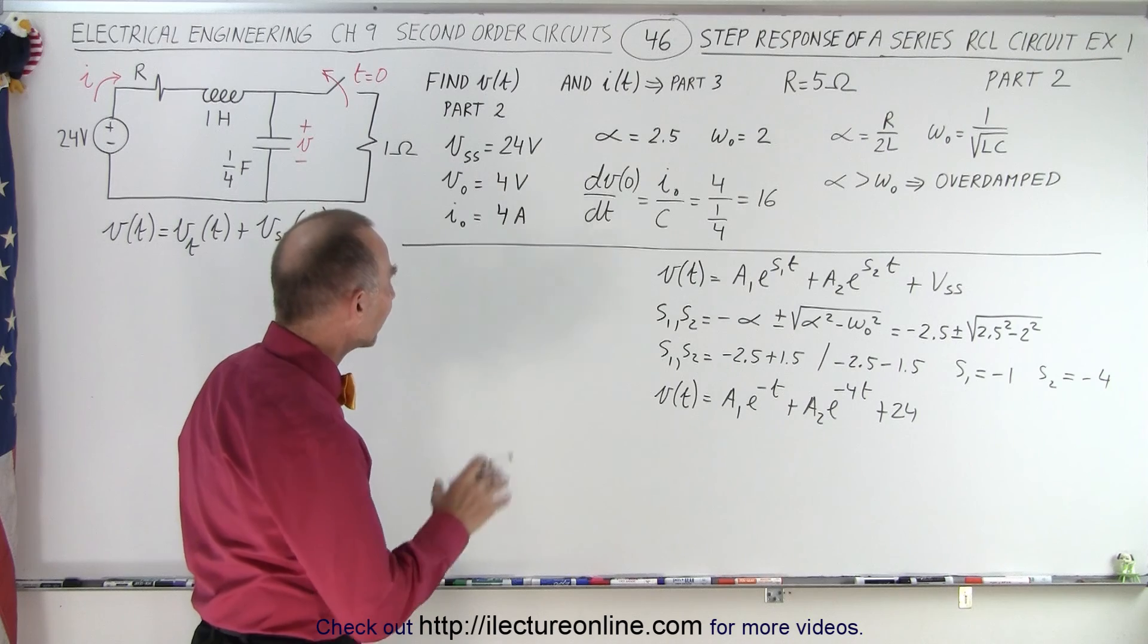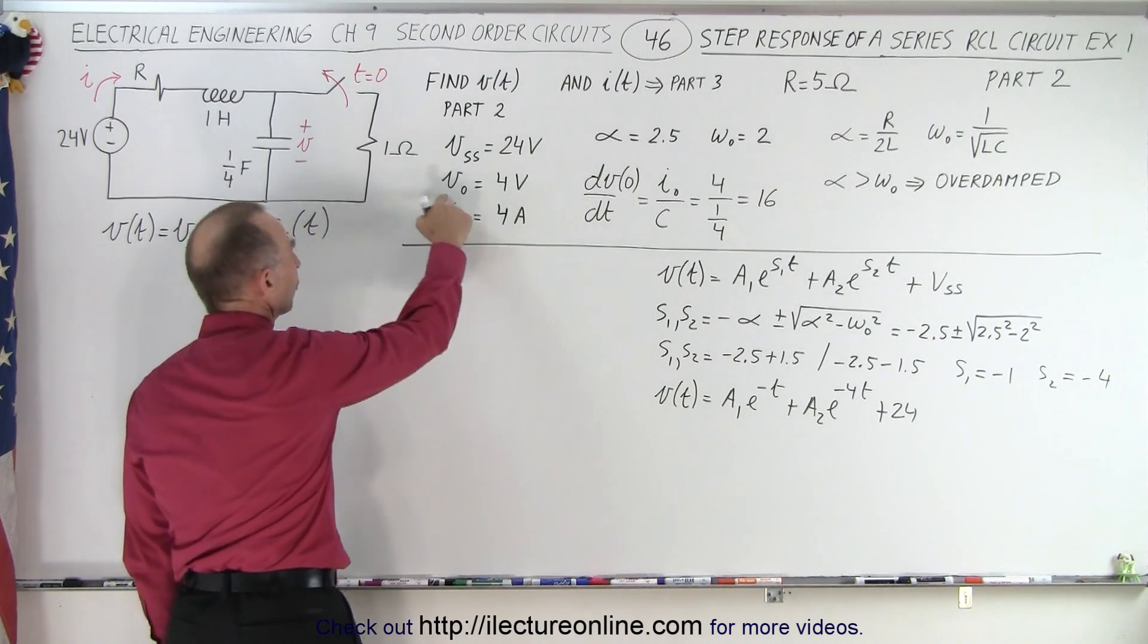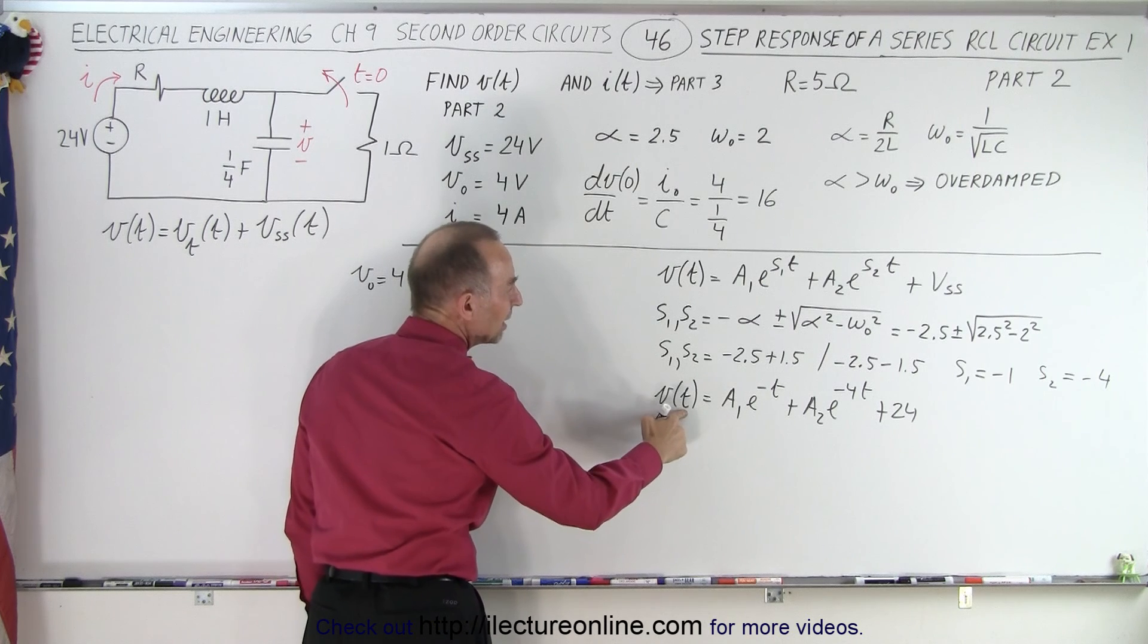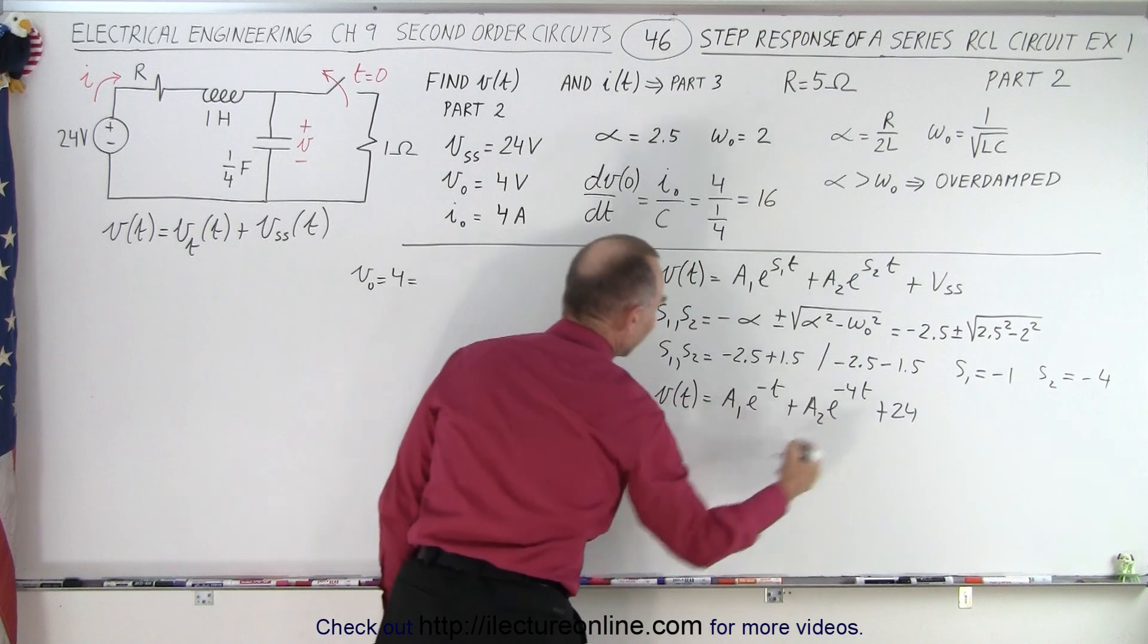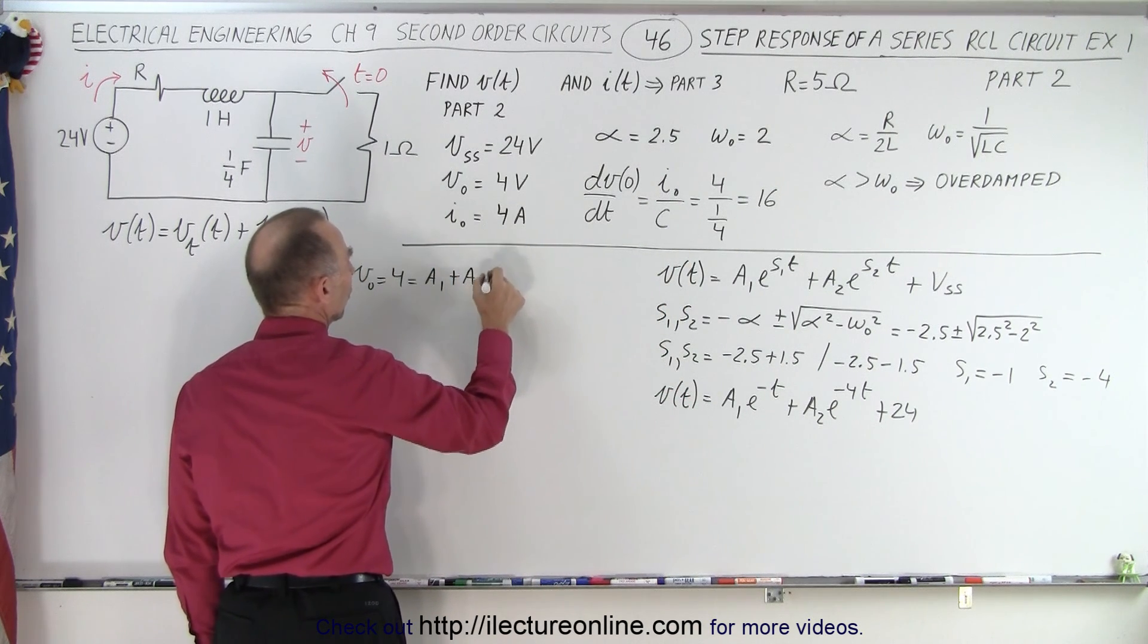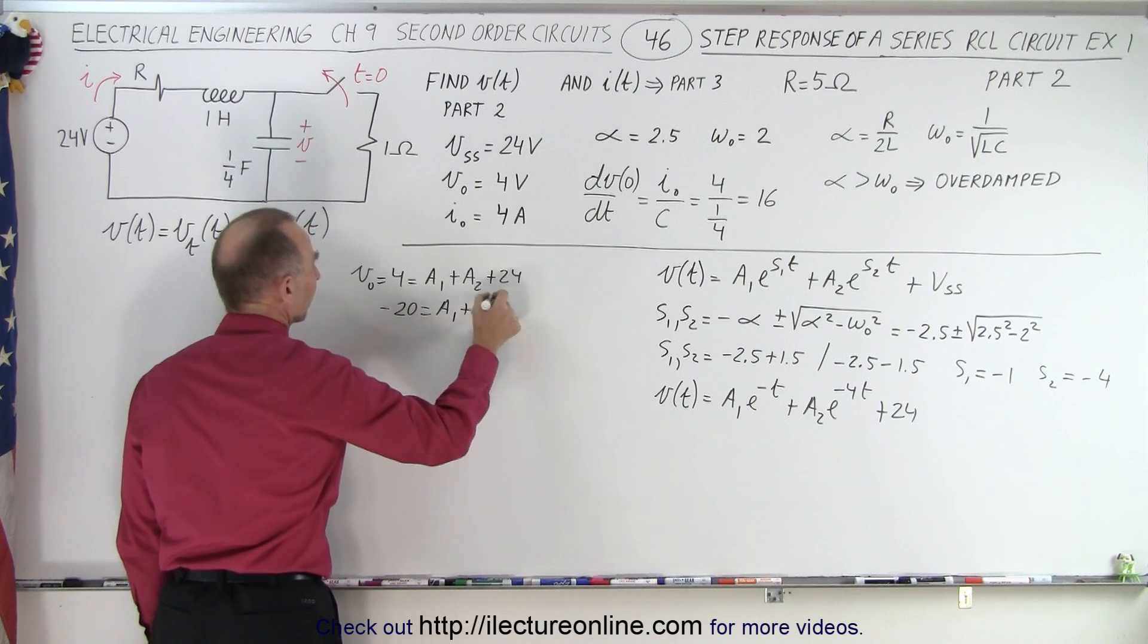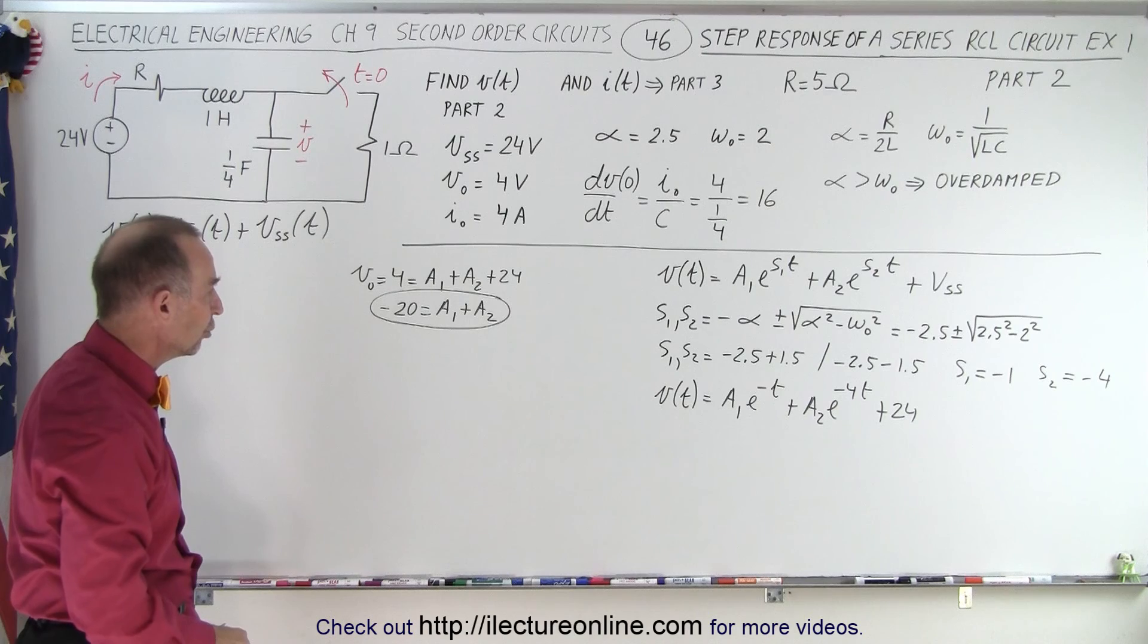So now what we can do is we can set that equal to 0 and solve for A1 and A2. And we know that the initial voltage equals 4, so V initial equals 4, which is equal to this equation when T equals 0. That makes this equal to 1, makes this equal to 1, and we have plus 24, so it gives us A1 plus A2 plus 24, or minus 20 equals A1 plus A2. Of course, that's not enough. We need one more equation to solve for A1 and A2.